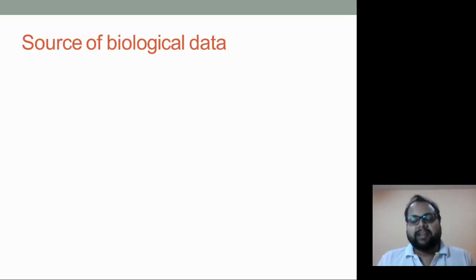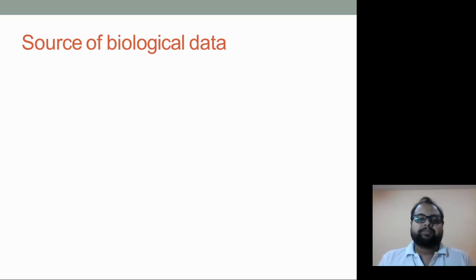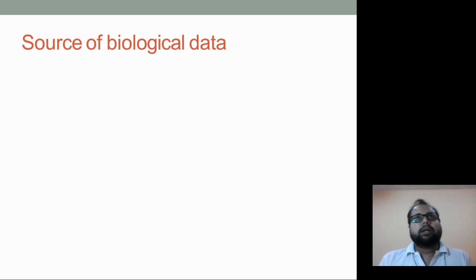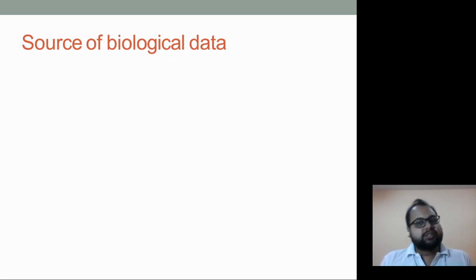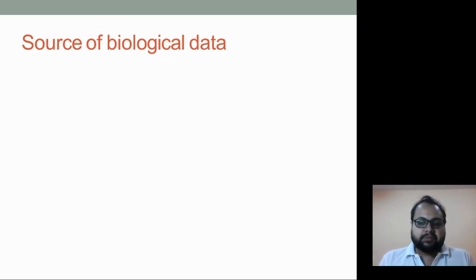Hi guys, Sanket here. Welcome to another session on protein-protein interaction network. In the first two sessions — part one and part two — we saw what is a protein-protein interaction network, what is graph theory, the different types of graphs based on edges, and what is an adjacency matrix. In this session, we are going to see the different sources of biological PPI data and the properties of protein-protein interaction networks.